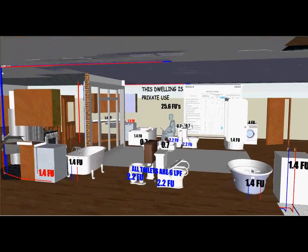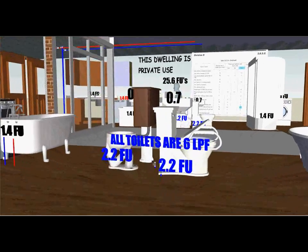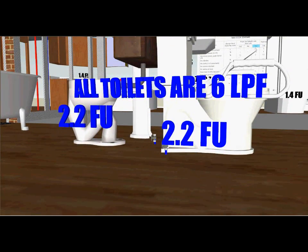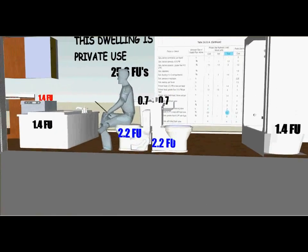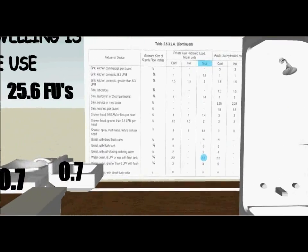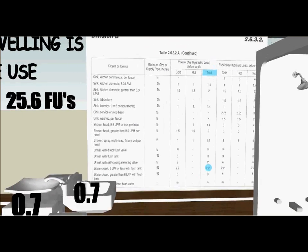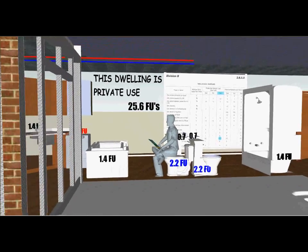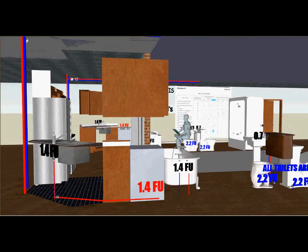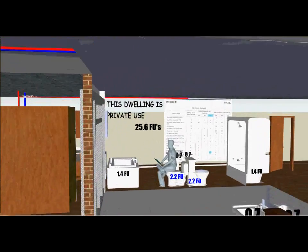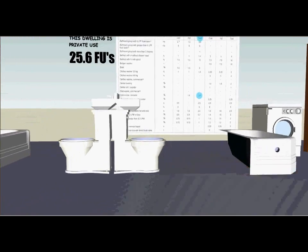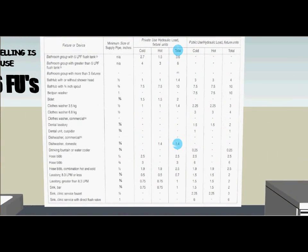In order to figure out how to use the tables, let's look at the toilets. All the toilets are 6 liters per flush and are worth 2.2 fixture units each. As we look at Table 2632A under the total column and under water closet, it shows 2.2 fixture units. Now let's look at the dishwasher, which has hot only serving it. In the same table under the total column, look for domestic dishwasher and it will read 1.4 fixture units.